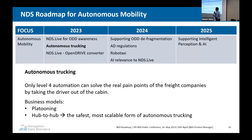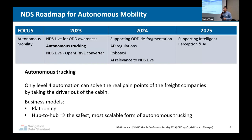For autonomous trucking, the business case is that only Level 4 automation can solve the real pain points of freight companies — getting the driver out of the cabin. There are two business models: platooning and hub-to-hub. Autonomous trucking seems a strong candidate for the first commercial Level 4 solution on the market, so we want to elaborate all requirements and customer needs for NDS to enable this use case.